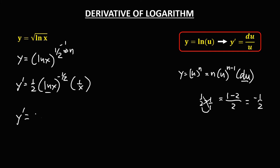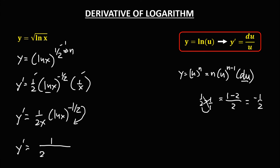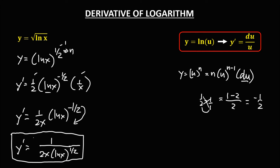Simplifying: y prime equals 1 half times 1 over x, which is 1 over 2x, times (ln x) to the power negative 1 half. To make the exponent positive, we bring it down: y prime equals 1 over (2x times (ln x) to the power positive 1 half). Or in radical form: 1 over (2x times the square root of ln x). This is now the derivative.